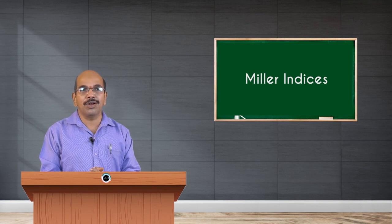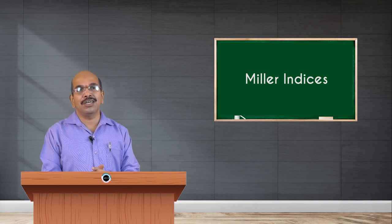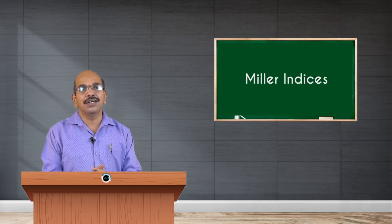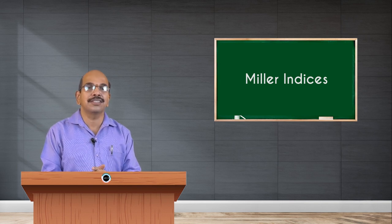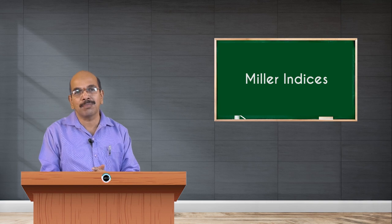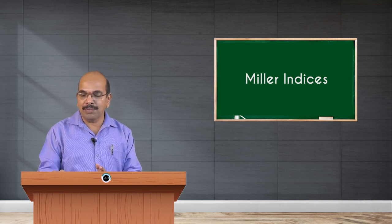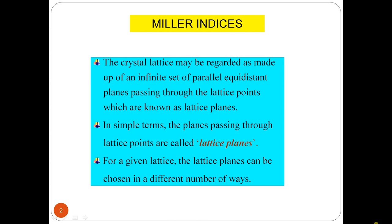Using Miller indices, one can define a particular plane or a set of planes in a crystal. The crystal lattice is regarded as made up of an infinite set of parallel equidistant planes passing through lattice points, which are known as lattice planes. In simple terms, the planes passing through lattice points are called lattice planes. For a given lattice, the lattice planes can be chosen in a number of different ways.